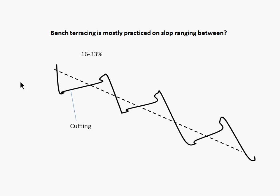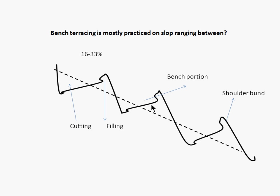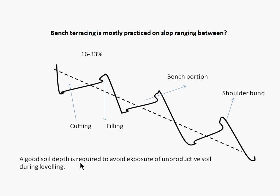What we do here? We remove the soil from here, cut the soil and put it here, and it takes this shape. The area in between is your bench portion. In this bench portion we can do the cultivation of the crop. If we want to make bench terracing, the area should have a good soil depth, because if it does not have a good soil depth then unproductive soil will be exposed.